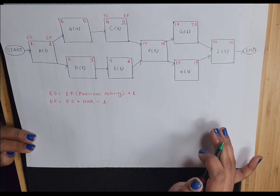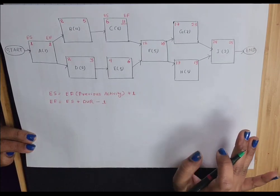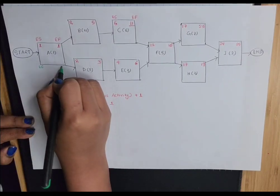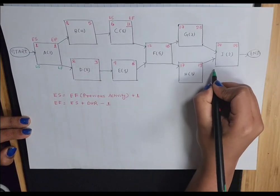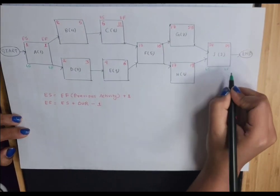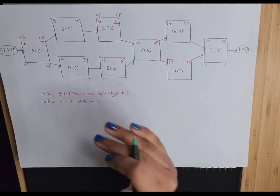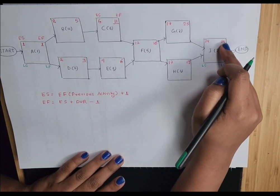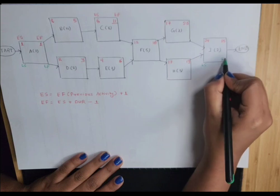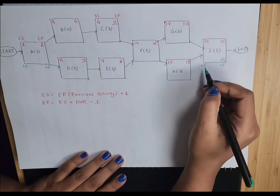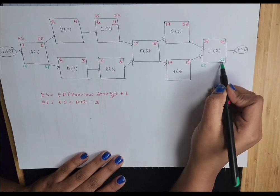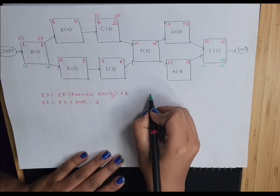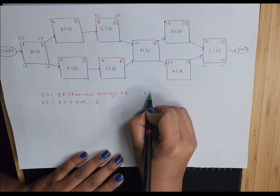Now let's calculate the late start and late finish for each activity. The bottom left corner will be late start and the bottom right will be late finish for each activity. This time we are going to move backwards — it's called the backward pass. For activity I, late finish is 25, same as the early finish, so that stays as it is. Late start will be late finish minus duration plus 1.